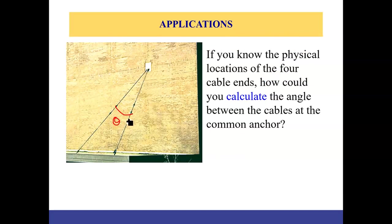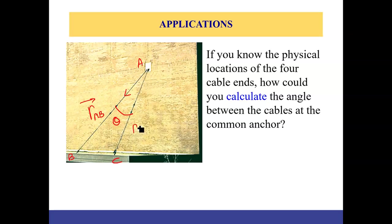To find the angle theta between two cables, we first find the position vectors. Let's say we have points A, B, and C. We write the position vector from A to B using coordinates, and the position vector from A to C using coordinates of A and C. Then using the dot product between the two vectors, we can calculate angle theta.